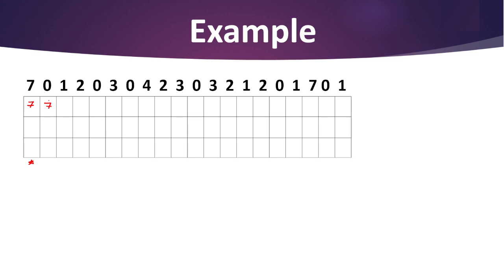7 is already there. The next number is 0. Our system looks for 0 in memory but won't find it since memory only has 7, so we write 0 — this is one more page fault. Next, 7 and 0 are already there. The third value is 1, which is not available, so we write 1 — one more page fault.